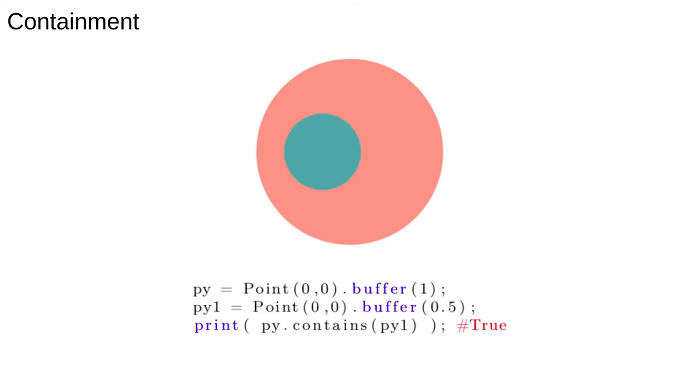A very useful and common operation is to figure out if one geometric object is inside another. For example, we might have a list of polygons representing countries and we want to know which country each GPS tagged tweet comes from. Shapely allows us to do this quite easily using the contains function. Executing this code should return true. We can also check if polygons or multi-polygons contain other polygons using the same syntax.